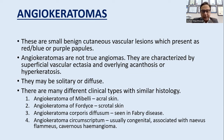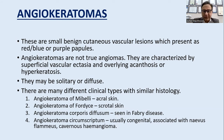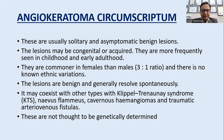Clinical types include: angiokeratoma of Mibelli — solitary lesion on acral skin; angiokeratoma of Fordyce — multiple lesions on scrotal skin; angiokeratoma corporis diffusum, also known as Fabry's disease; and angiokeratoma circumscriptum — usually congenital, associated with nevus flammeus and cavernous hemangioma. Angiokeratoma circumscriptum is solitary and asymptomatic, benign, can be congenital or acquired, most often seen in childhood or early adulthood. Female-to-male ratio is 3:1. It may coexist with Klippel-Trénaunay syndrome, nevus flammeus, cavernous hemangioma, and traumatic arteriovenous fistulas.